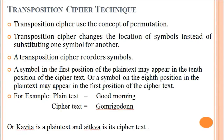Second: transposition techniques. Transposition techniques differ from substitution techniques. In substitution technique, one letter or one character is replaced by another. But in transposition cipher, there is a reordering of symbols, characters, or numbers. Transposition ciphers use the concept of permutation — transposition ciphers change the location of symbols instead of substituting one symbol for another.